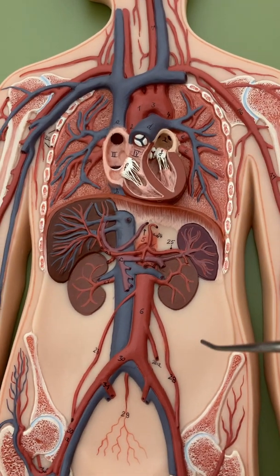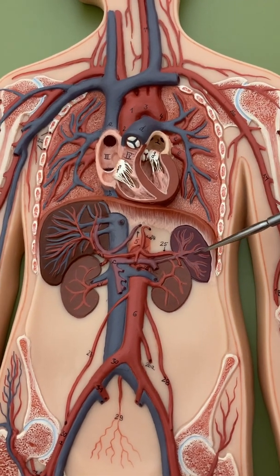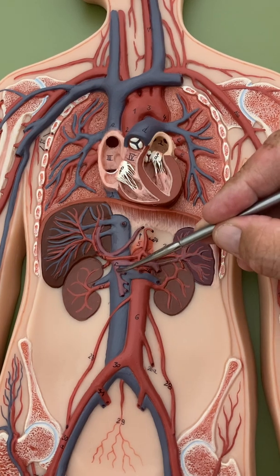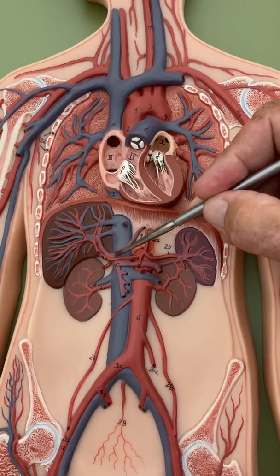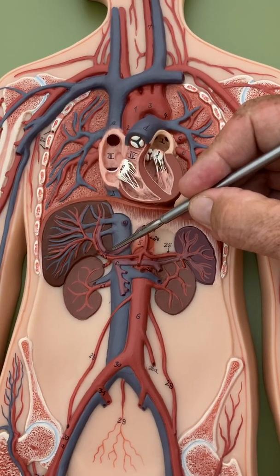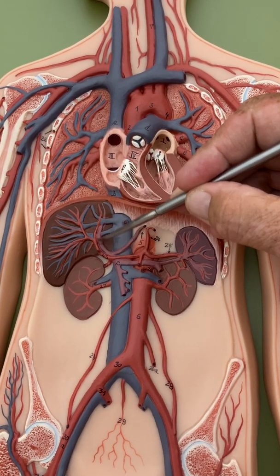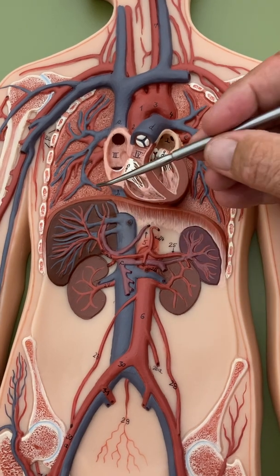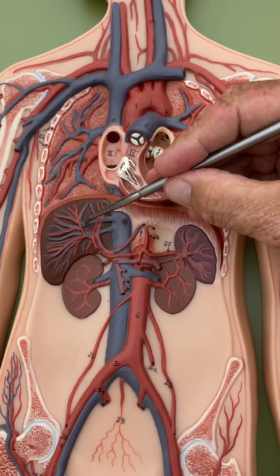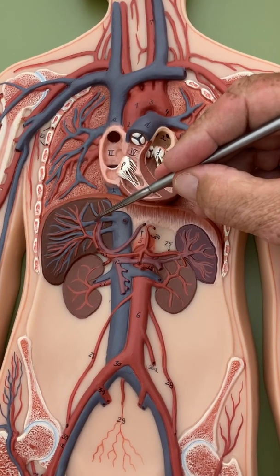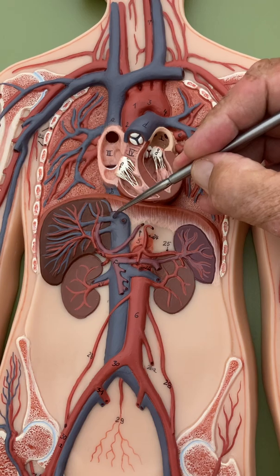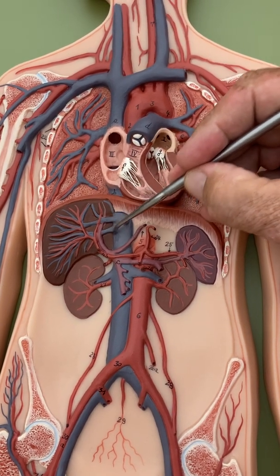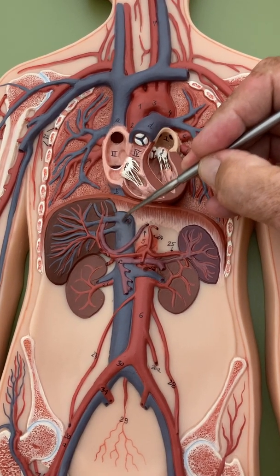To go through this again: splenic vein (purple), mesenteric vein (purple), gastric vein (purple) — they all join to form the hepatic portal vein going into the liver. Blood coming out of the liver is the hepatic vein, shown in blue. Back to the vena cava.